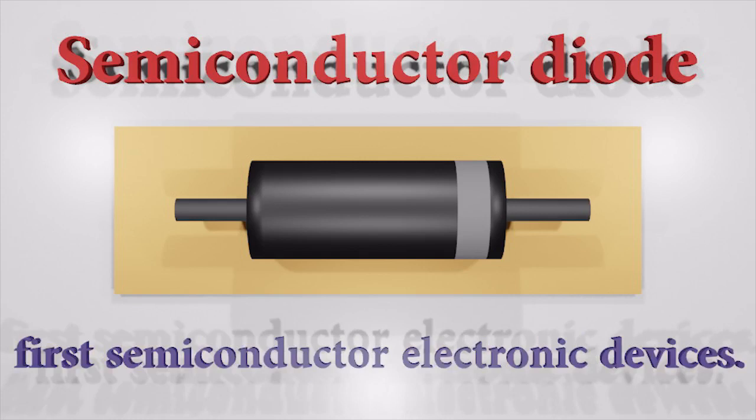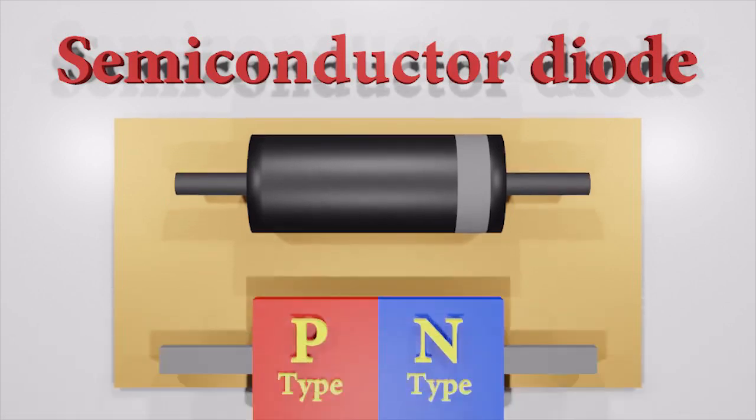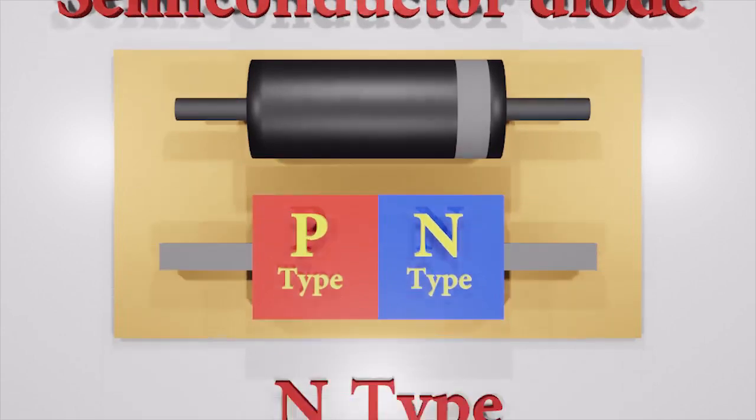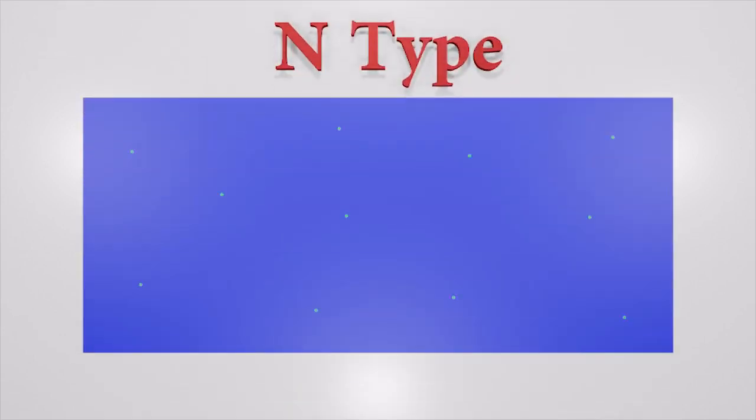These are the first semiconductor electronic devices. A semiconductor diode is just a p-n junction connected to two electrical terminals: p-type and n-type inside a single crystal of semiconductor. The inside contains free electrons that can move through the conductor. These electrons can act as charge carriers.